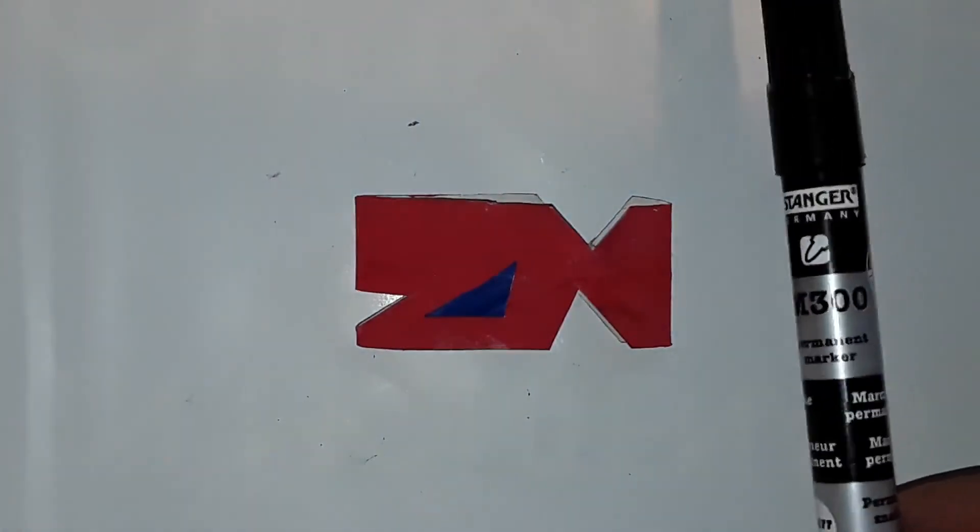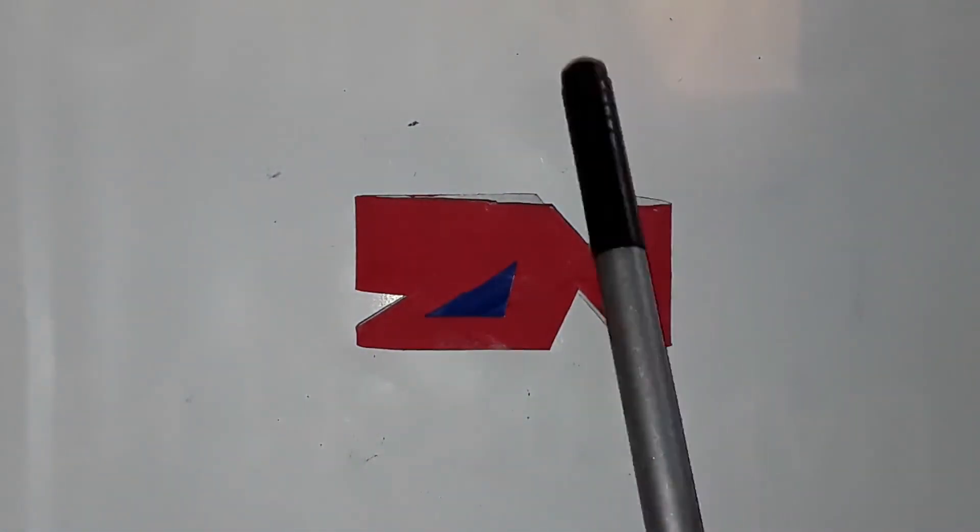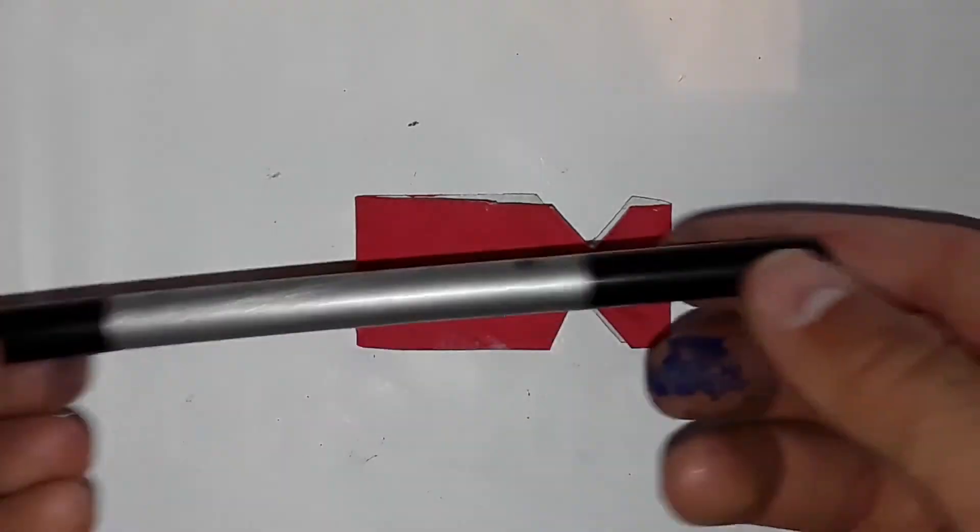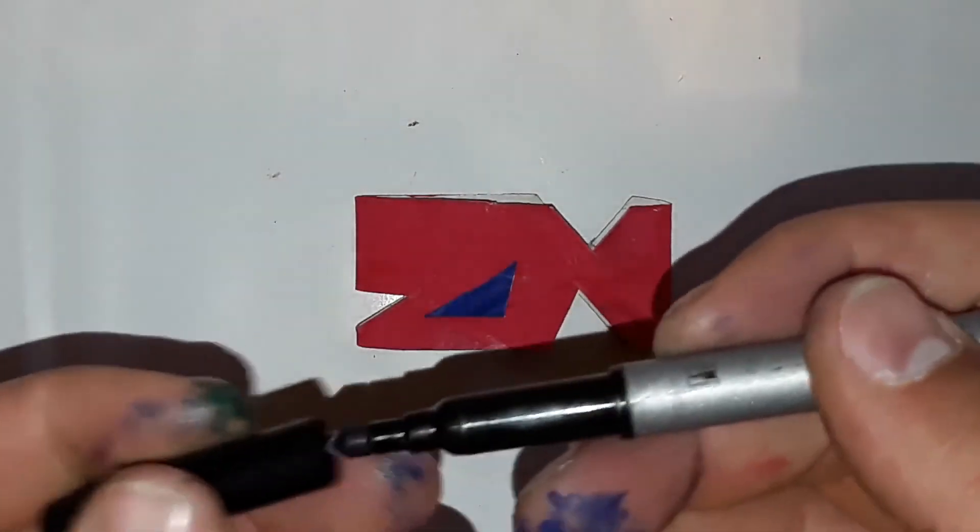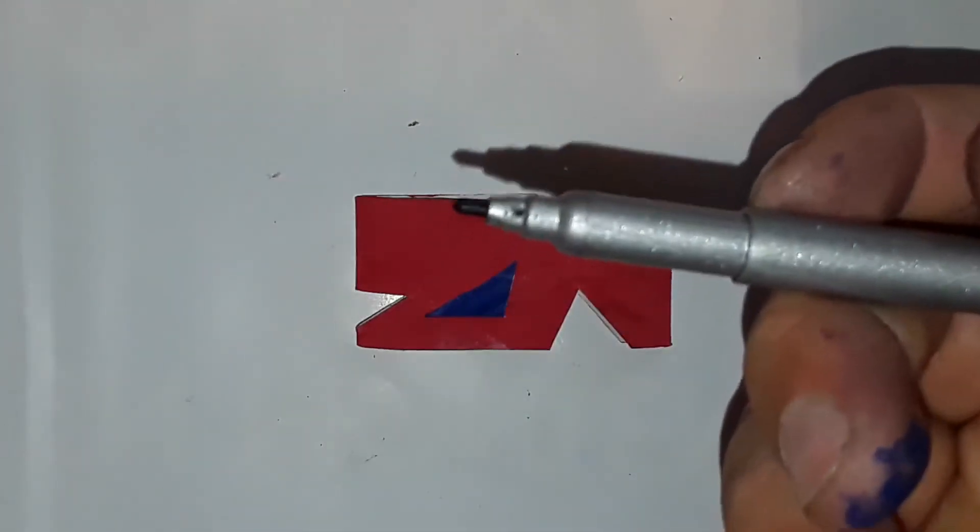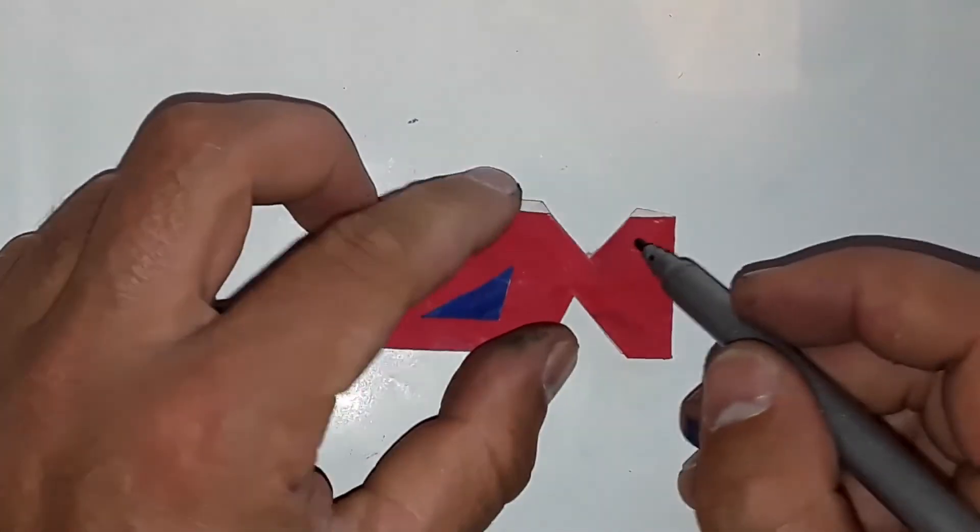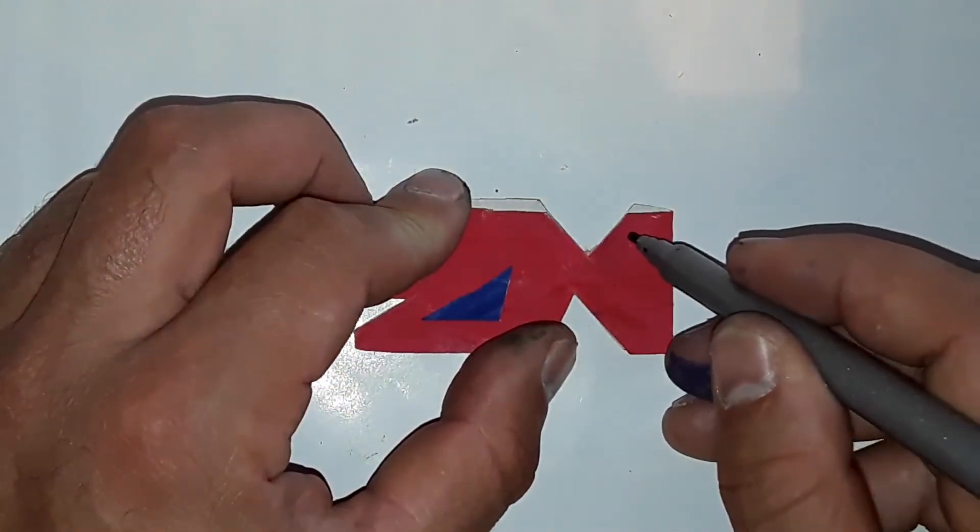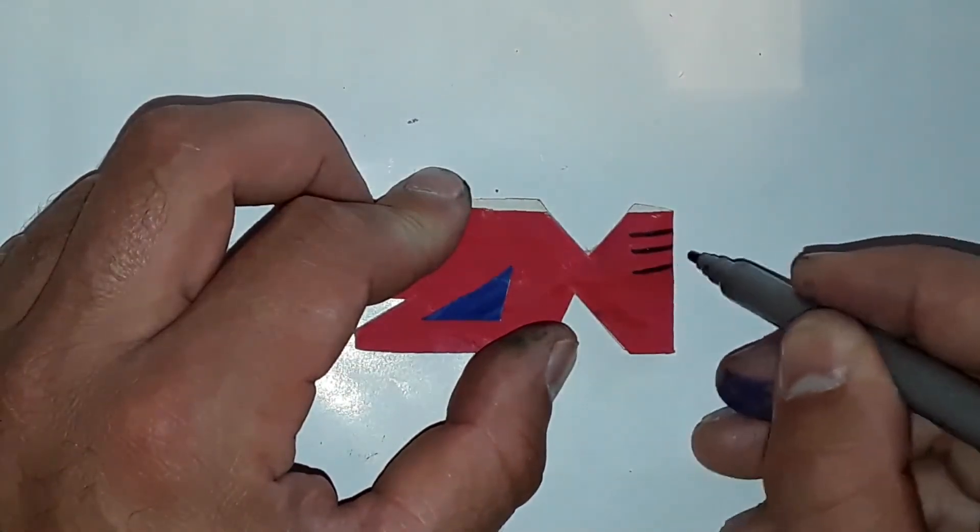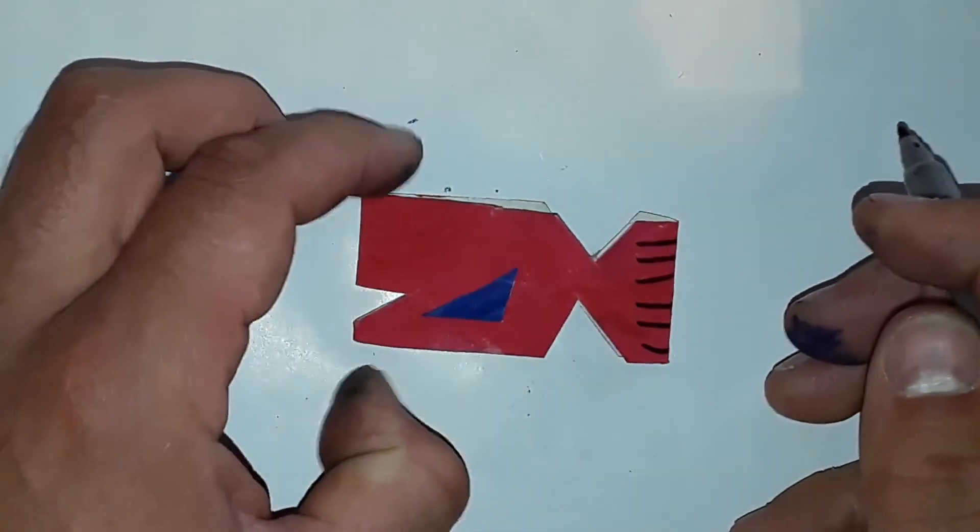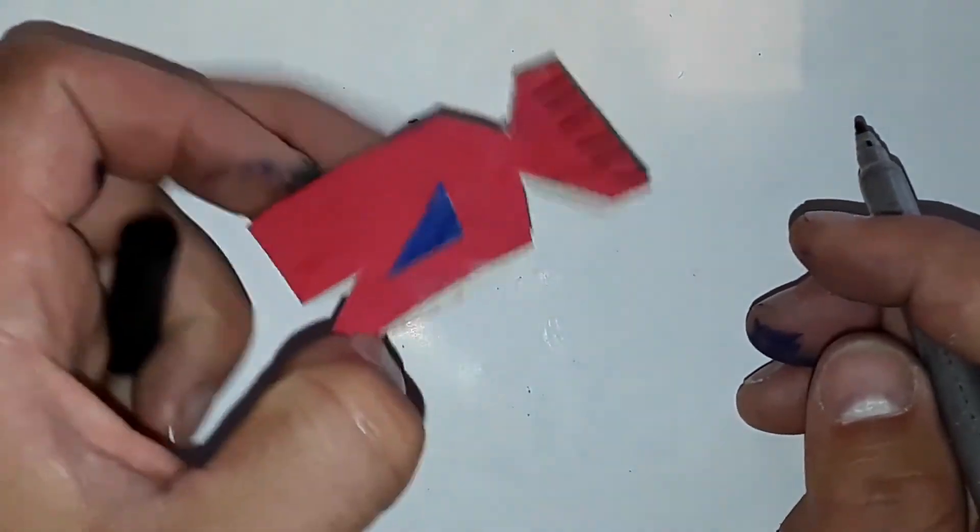Now we draw in the back fin. For this, take a black marker. It can be a bit thicker or thinner, whatever you have. And draw lines like this. Do the same on the other side.